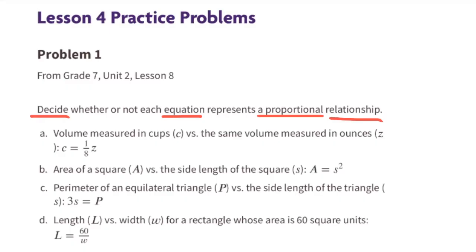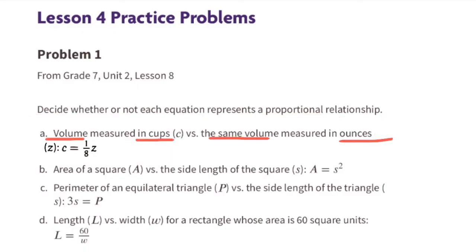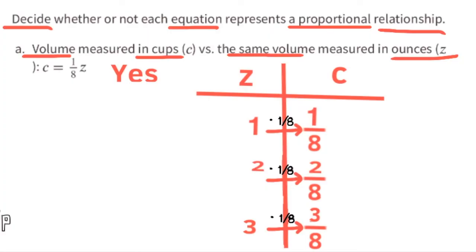Decide whether or not each equation represents a proportional relationship. Part a: volume measured in cups c versus the same volume measured in ounces z. This equation can be written as c equals 1/8 z. Yes, this represents a proportional relationship. Since there are 8 ounces in one cup, you multiply the number of ounces times 1/8. For example, 1 oz × 1/8 = 1/8 cup, 2 oz × 1/8 = 2/8 cup. The constant of proportionality is 1/8.